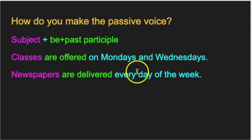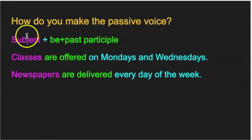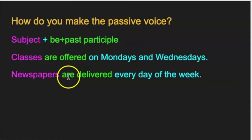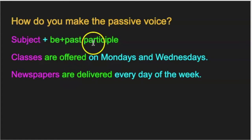Another example: 'Newspapers are delivered every day of the week.' Newspapers is the subject, the verb to be is 'are,' and the past participle is 'delivered.'